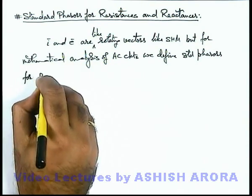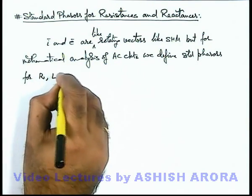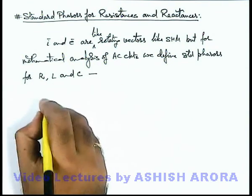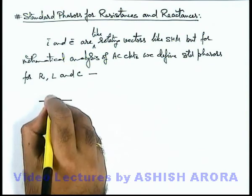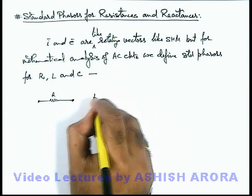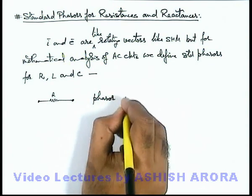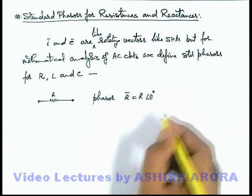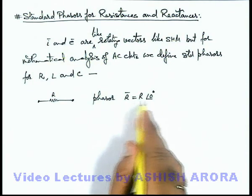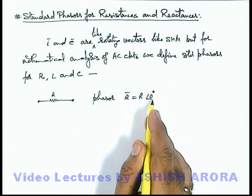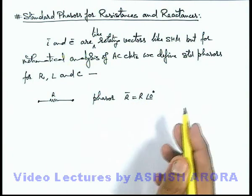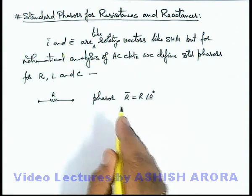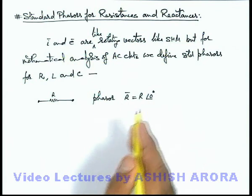For R, L and C, and these standard phasors we write like if there is a resistance R, its phasor is written as R phasor and it is written as R angle zero degree. There is no direct logic behind why the phasor is given in this form. Directly you need to use it in various circuits to analyze. Actually these forms are derived to analyze electrical circuits for alternating current mathematically.